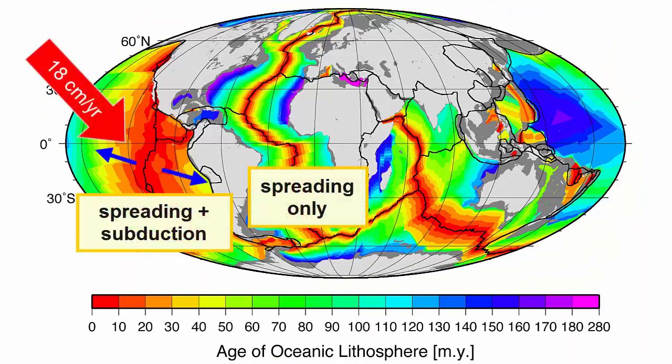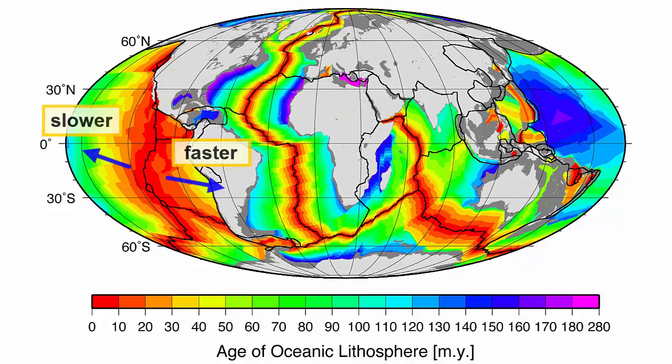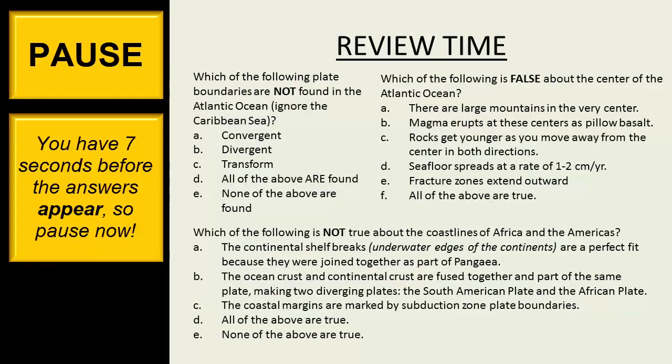Does it seem likely that seafloor spreading accompanied by subduction would move faster than seafloor spreading that has to push away continents and has no subduction to help it? Also notice that spreading is faster on the east of the ridge. We can see that the subduction zone is much closer on this side. Does that make a difference? These are all good questions to consider as we study global plate tectonics.